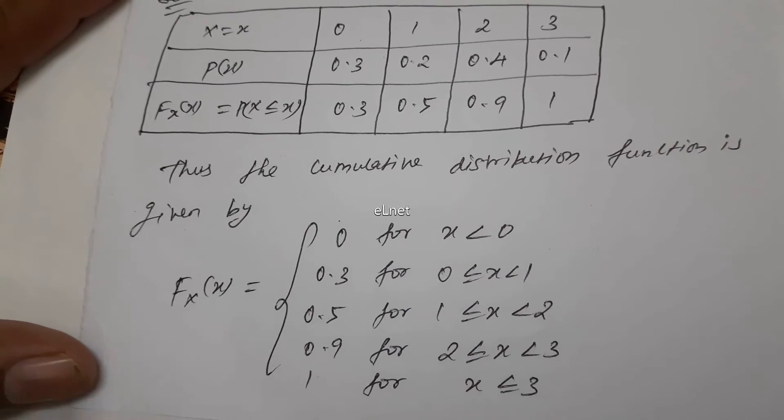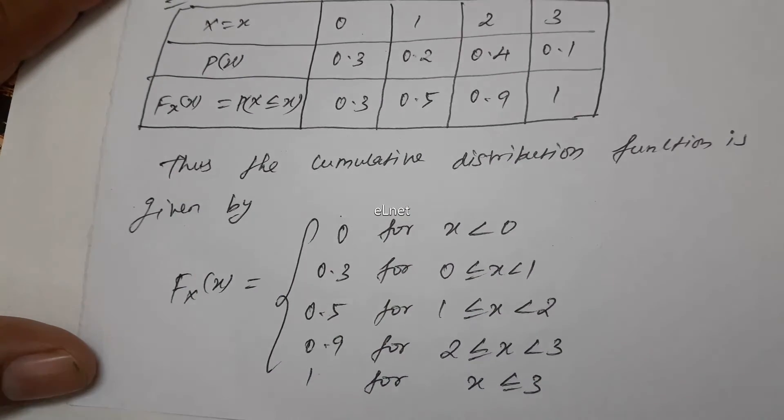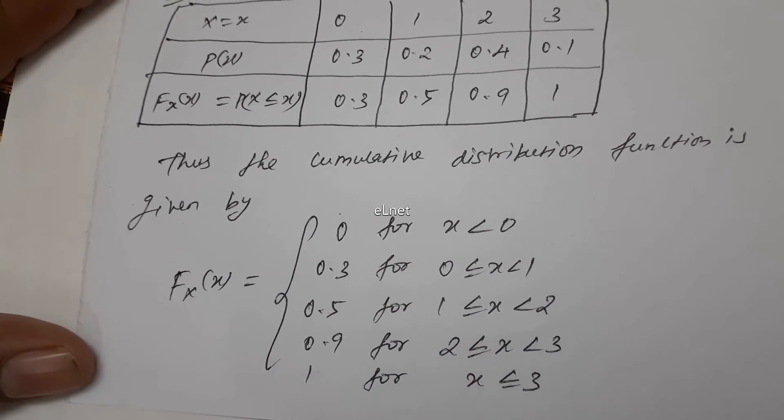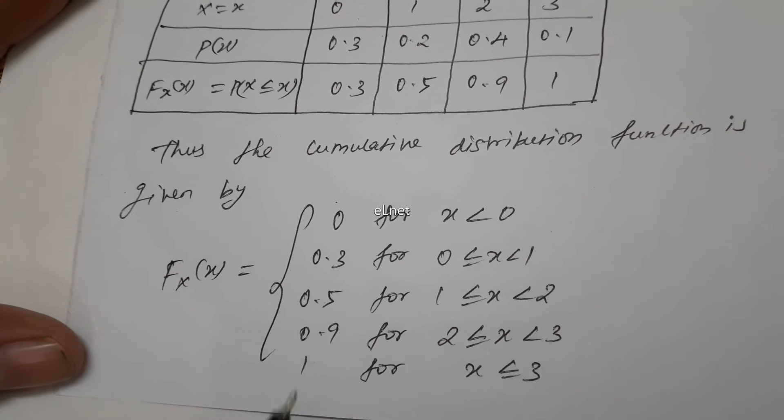Next is 0.9 for 2 less than or equal to x less than 3. Clear? Finally, 1 for x greater than or equal to 3. So the answer is 1.